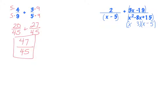To get a common denominator — similar to how 5 times 9 gave me 45 with numbers — I'm going to use x minus 3 times x minus 5 as my common denominator. The first fraction is missing an x minus 3, so I multiply it by x minus 3 on the top and bottom to match. The second fraction already has that common denominator.